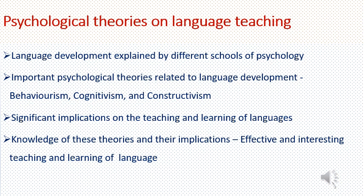Language development has been explained by different schools of psychology. Some of the important psychological theories related to language development are those of behaviorism, cognitivism, and constructivism. These theories have significant implications on the teaching and learning of languages. As language teachers, we should be aware of these theories and their implications in order to make the teaching and learning of language effective and interesting.